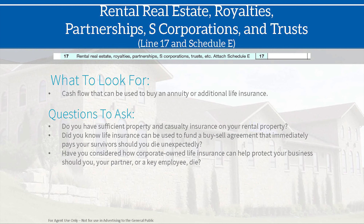Rental, real estate, royalties, partnerships, S-Corporations, and trusts appear on line 17 and Schedule E. This cash flow could be used to buy an annuity or additional life insurance — it may be extra income beyond what the individual relies on for their livelihood. A great question: do you know life insurance can be used to fund a buy-sell agreement that immediately pays your survivors should you die unexpectedly? The key question is: what is that income being used for?